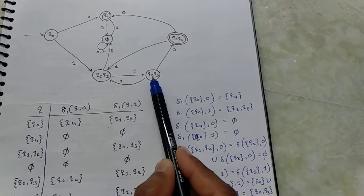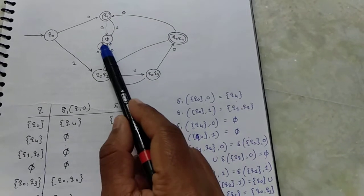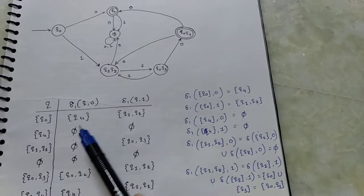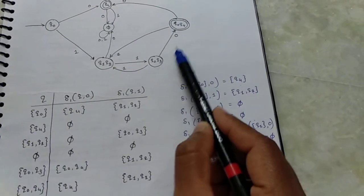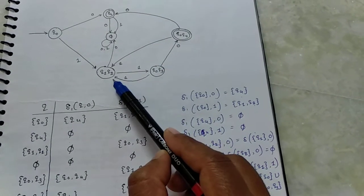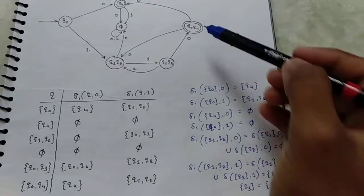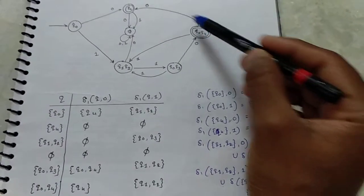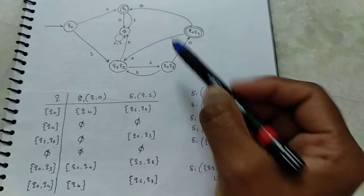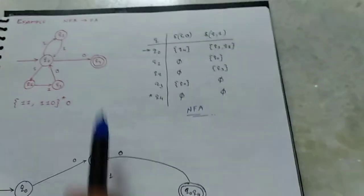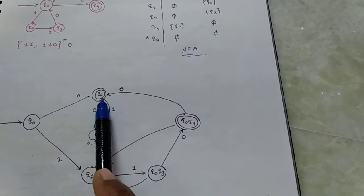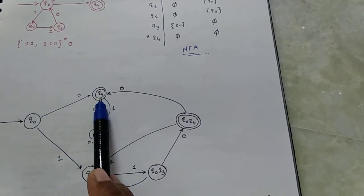q1q2 to 0 is phi. q1q2 to 1 is q0q3. q0q3 to 0 is q0q4. q0q3 to 1 is q1q2. q0q4 to 0 is q4. q0q4 to 1 is q1q2.